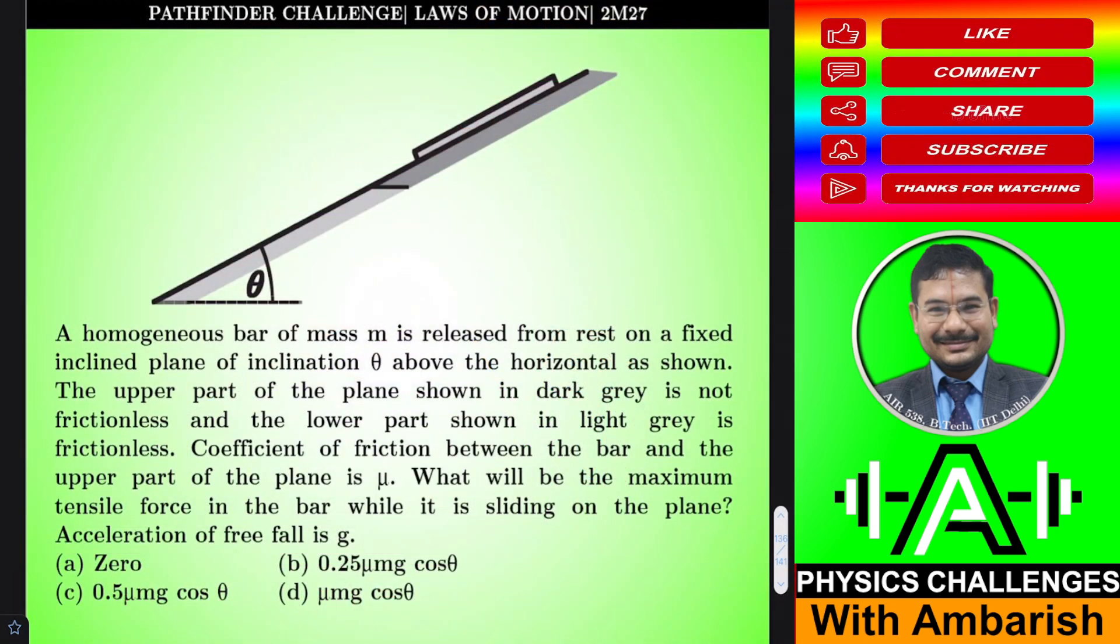Here's the problem: a homogeneous bar of mass M is released from rest on a fixed inclined plane of inclination theta above the horizontal. The upper part of the plane shown in dark grey is not frictionless, it is rough. And the lower part shown in light grey is frictionless. So this part is frictionless and this part is rough.